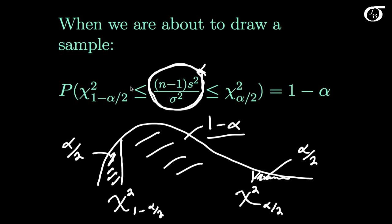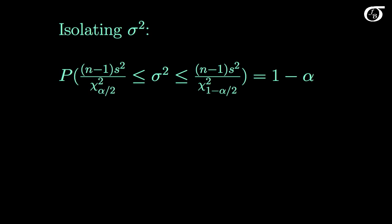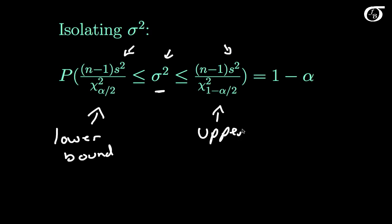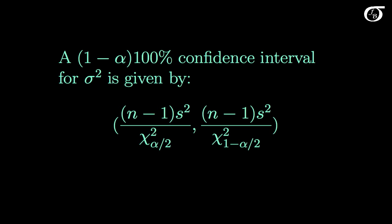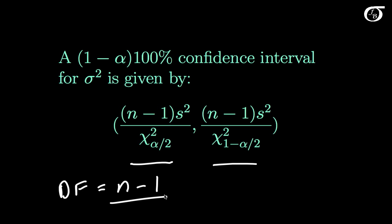What we're going to do to create our confidence interval is isolate sigma squared using a little algebra. We end up with sigma squared on its own in the middle of the probability statement. Remember, S squared is the random variable — that's where the uncertainty comes from — while sigma squared is a fixed unknown parameter. The lower bound of our confidence interval is the left expression, and the upper bound is the right expression. To summarize: a (1 minus alpha) times 100% confidence interval for sigma squared is given by those two quantities, with degrees of freedom equal to n minus 1.